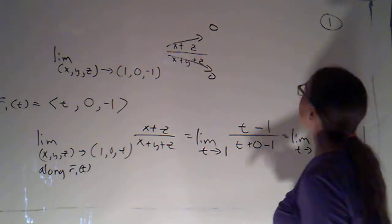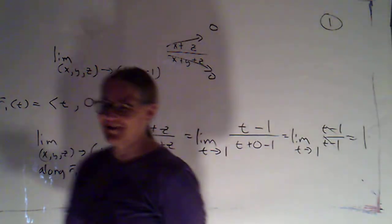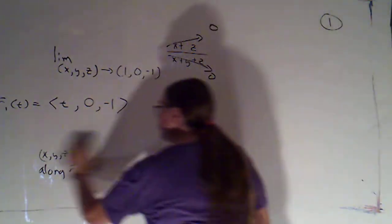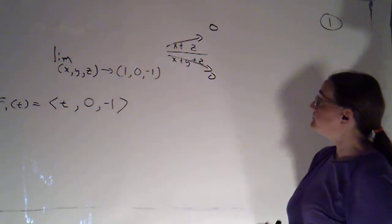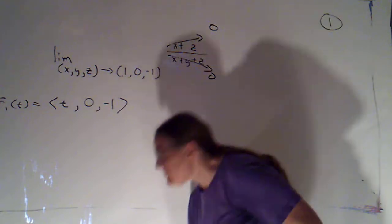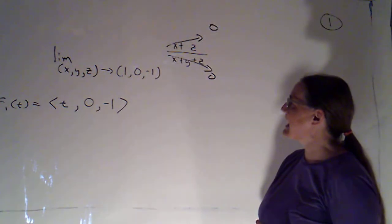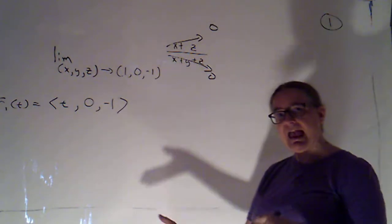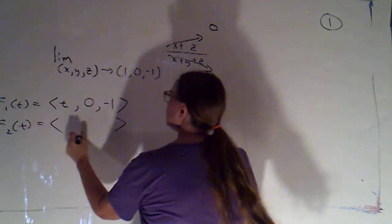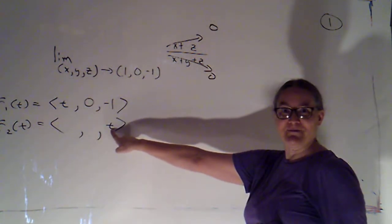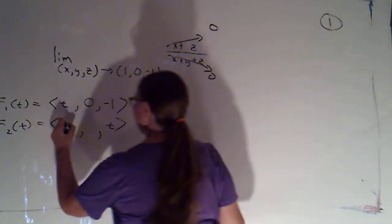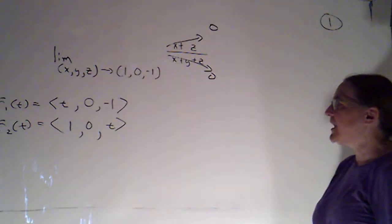So, along R1, we got that the limit was 1. I'm going to just keep that recorded up there. And let's try another path, hoping to either get a different number or to get that the limit does not exist. I'm actually going to go parallel to the z-axis next. So that would mean that I'd be holding x and y fixed. So let's call that R2(t). If it's parallel to the z-axis, z is the variable that's changing, I'm holding x and y fixed. And if they're going to go through this point, they'd better be fixed at the coordinates of that point. So we'll try (1, 0, t).